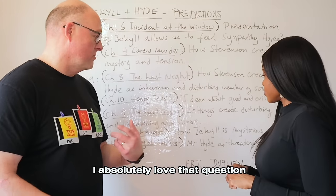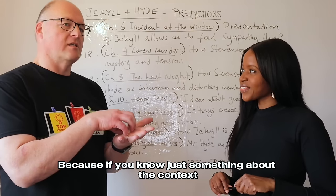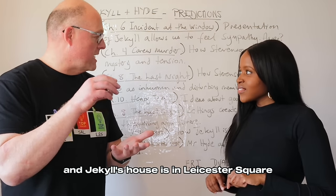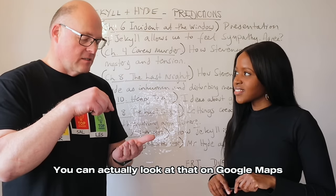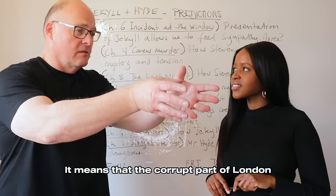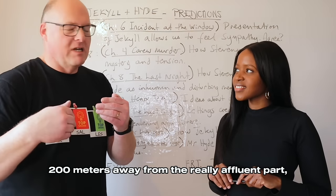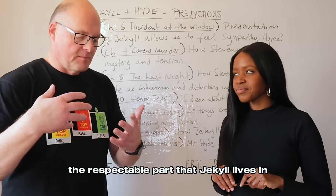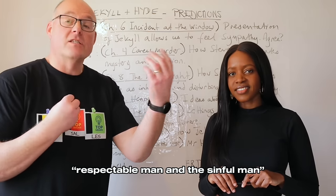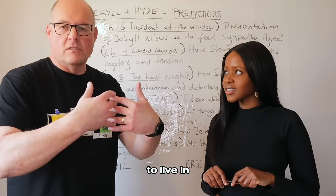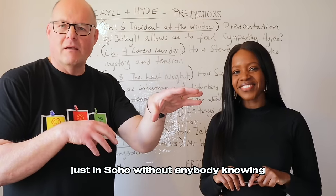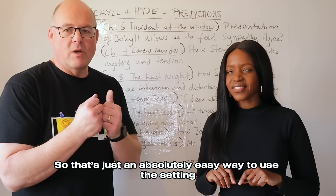I absolutely love that question because if you know just something about the context, it's easy to get the top grades. Hyde's flat is in Soho and Jekyll's house is in Leicester Square — you can look that up on Google Maps. The corrupt part of London, Soho, is literally 200 metres away from the affluent, respectable part where Jekyll lives. What Hyde is saying is there's actually no difference between the respectable man and the sinful man — they're even choosing the same parts of London, with the rich indulging their sinful pleasures in Soho without anybody knowing.